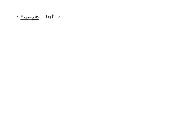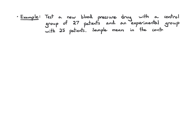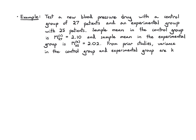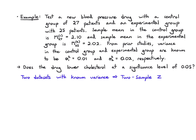Now let's consider a different scenario. We're testing a new blood pressure drug with a control group of 27 patients receiving a placebo and an experimental group of 25 patients receiving the new drug. We record the sample means of blood pressure as 2.1 for the control and 2.02 for the experimental group. From prior studies, the variances are known: 0.01 for control and 0.02 for experimental. We'll ask: does this drug lower cholesterol at a significance level of 0.05? Since we have two data sets with known variances, we apply a two-sample z-test.